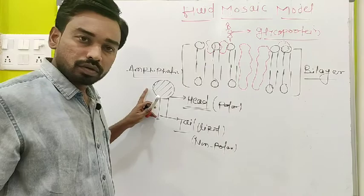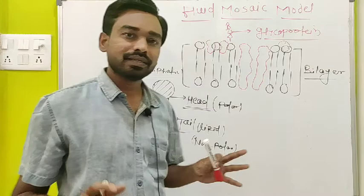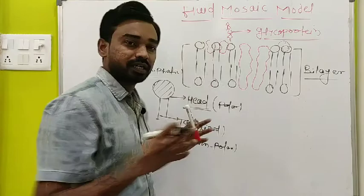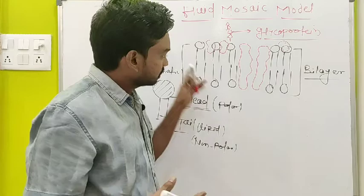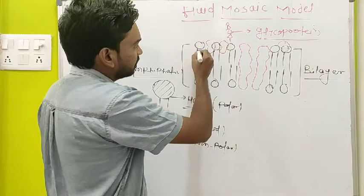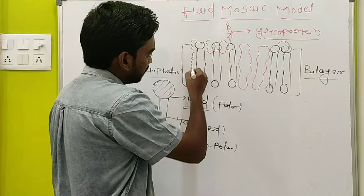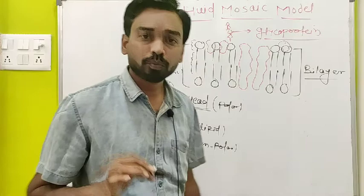If you observe a single molecule of the plasma membrane, they are arranged in a specific manner — the head is pointed outward and the tail is pointed inward. The outer part is polar, and the inner part is non-polar. This means most of the structure of the plasma membrane is non-polar, and only a very small part is polar.